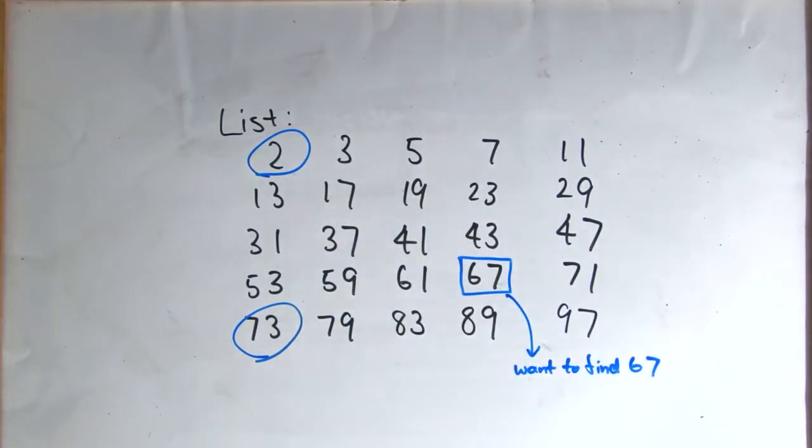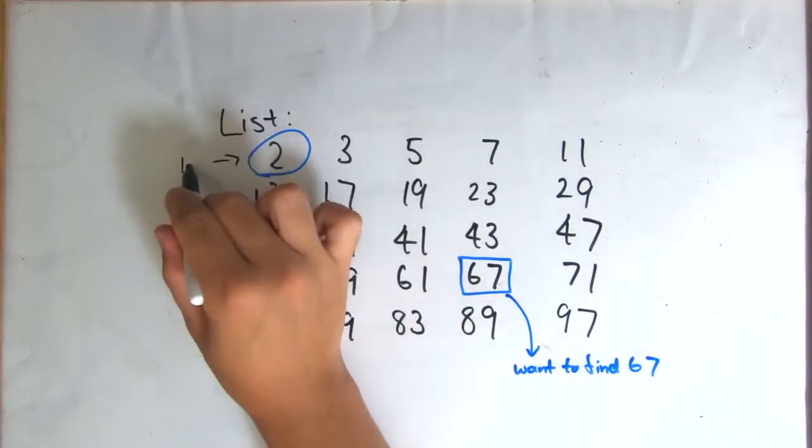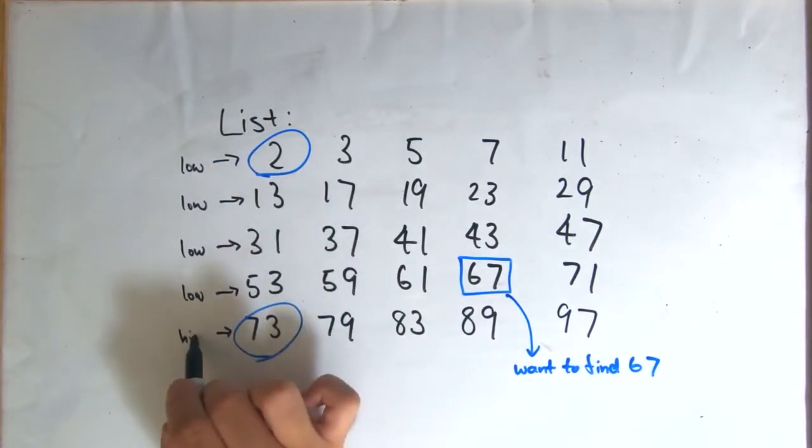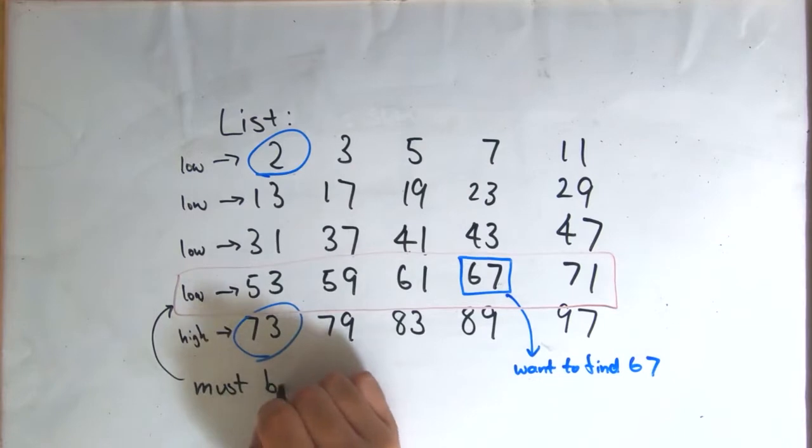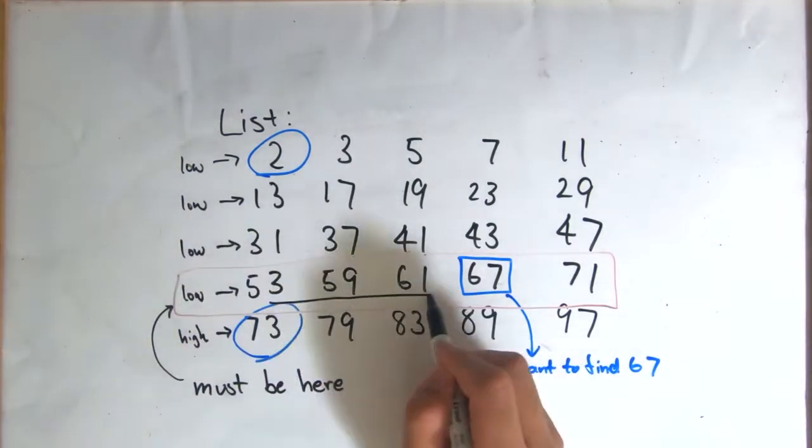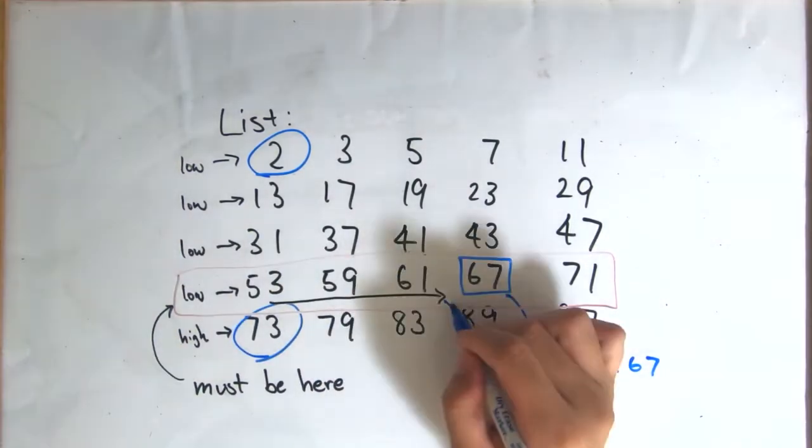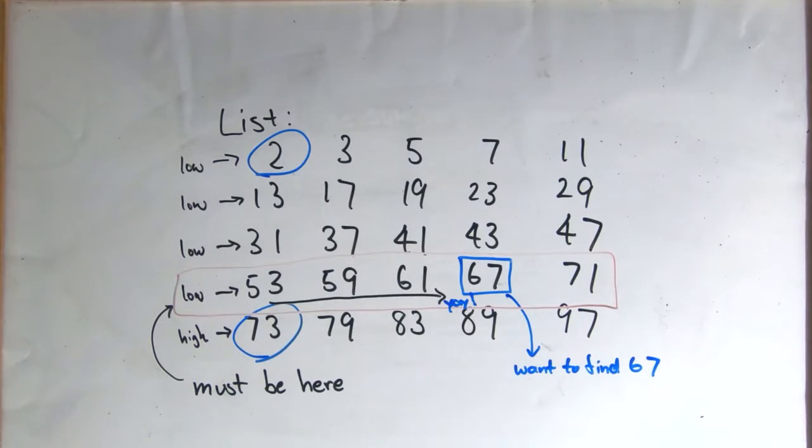If you go over the number you want to find, then it must have been in the previous row. So then you can just search through that row to see if the number is there. This is much more efficient than the previous method.